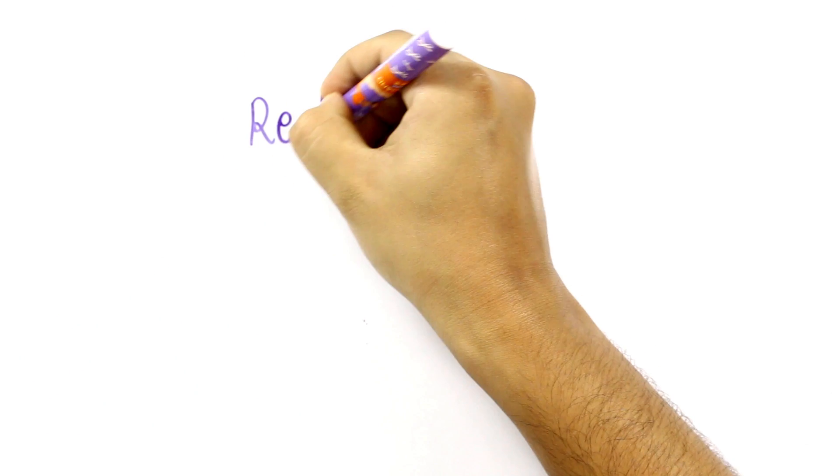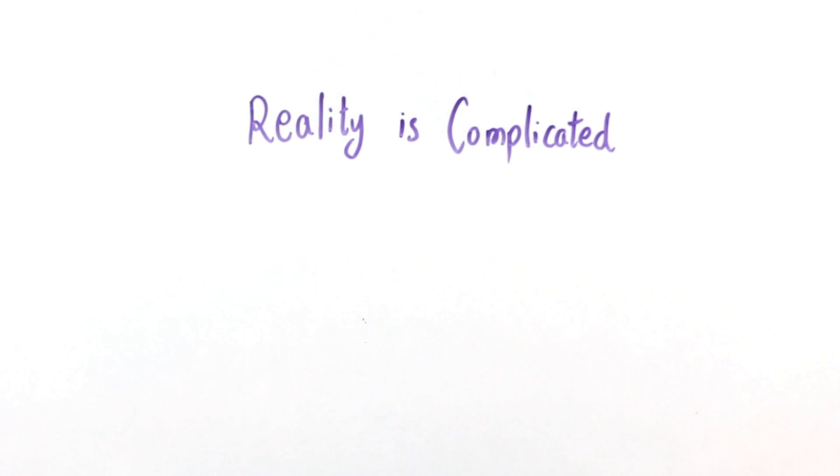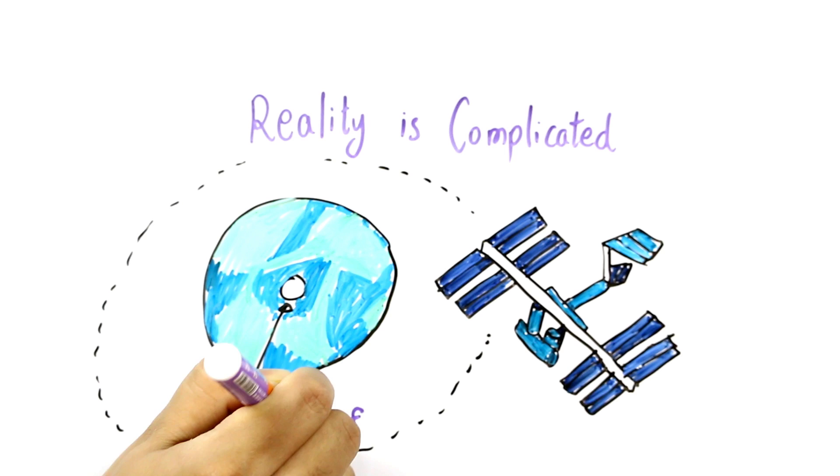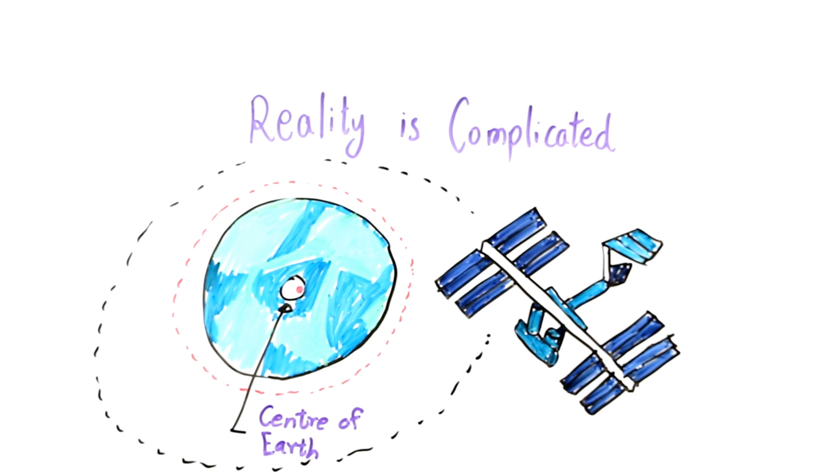But reality is always more complicated. For example, when the International Space Station orbits Earth, both Earth and the space station orbit that combined center of gravity.